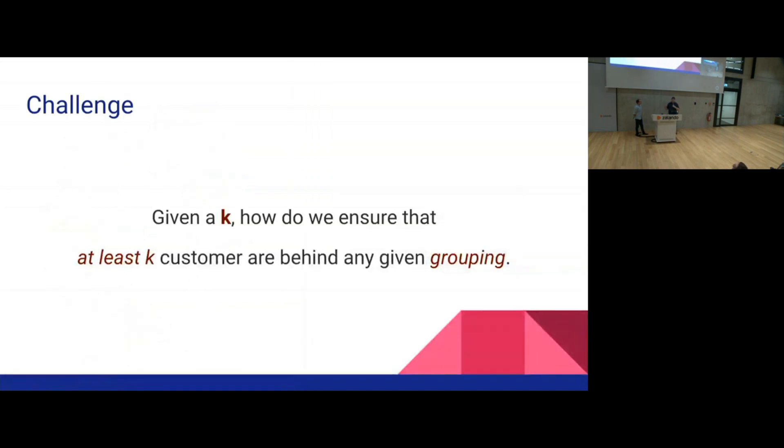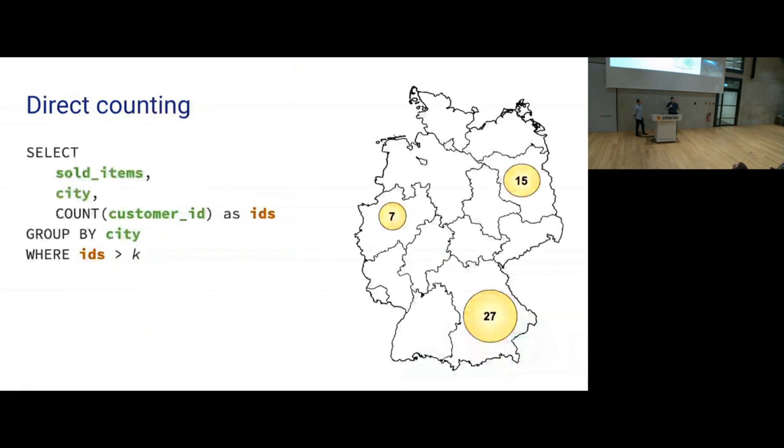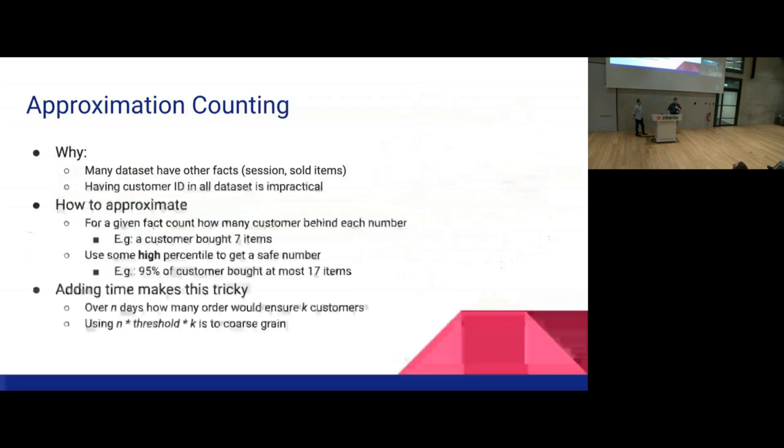Our approach was to look at all our data and see what we can do. We wanted to find K that would ensure at least K customers were behind every grouping in our tool. We went through the entire tool checking this out. One way to figure this out is direct counting. You can say, how many sold items do I have per city? Count also the customers. If you have at least K customers, then I can show the data. But this gets tricky when you start putting time series and filtering and other things that aren't necessarily sold items, like sessions. How many sessions happened? It's really hard to track sessions to individuals. Not everybody's logged in.